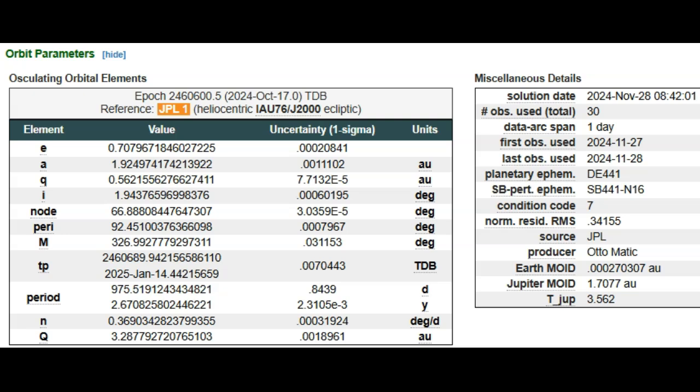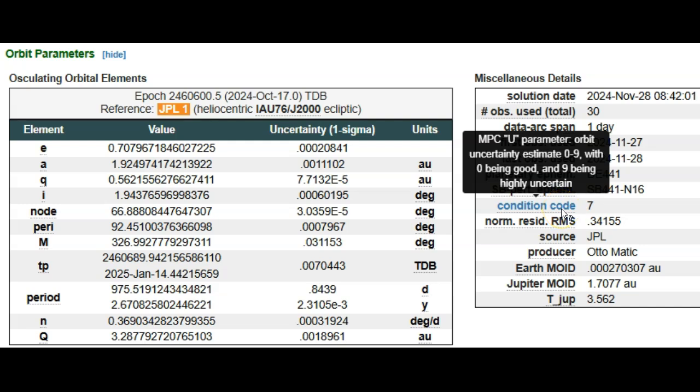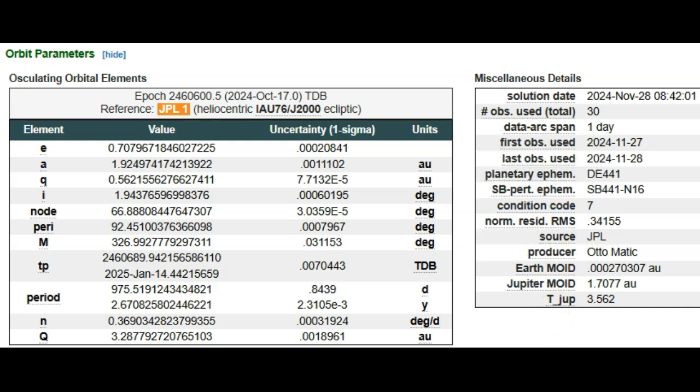Besides the speed of the rock, which again is 21.4 kilometers per second, extremely fast, we have a really high condition code. The condition code is seven. Nine being they have no idea, highly the uncertainty as to where the space rock is headed, and zero being they know exactly where it's headed. So obviously seven is much closer to nine than zero, so there's a lot of questions about the space rock. It could be much larger, it could have companions.